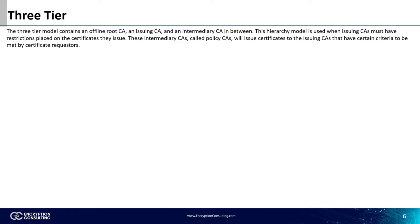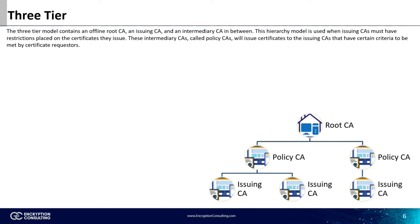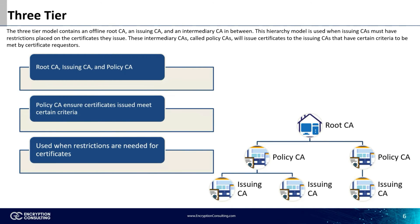The final model is the three-tier model. This model is made up of an offline root and online issuing CAs, with intermediary certificate authorities called policy CAs in between. The policy CA acts as a guide to the issuing CA by ensuring certain criteria are met by the certificate requesters. An example would be that issuing CA1 needs a requester to appear in person, while CAs 2 and 3 only authenticate users with Level 3 security. This architecture model is used in situations where CAs need restrictions set in place for requesters.